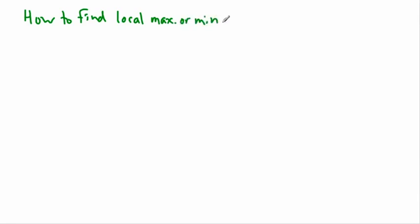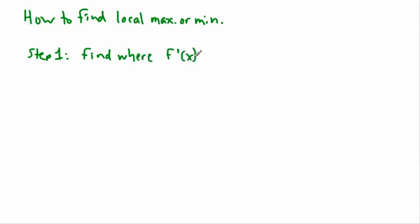I've got a handy two-step process. Step one: find where f prime of x equals zero. We have to find that — in other words, you find where your derivative is zero and you find the x values where this occurs.